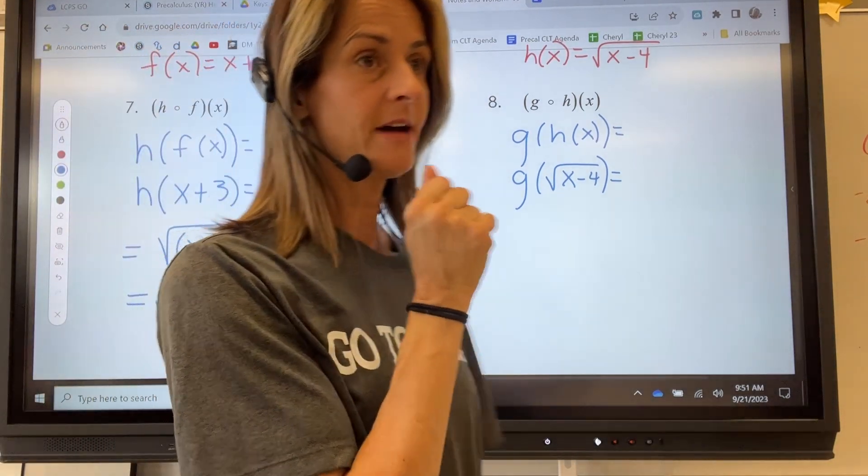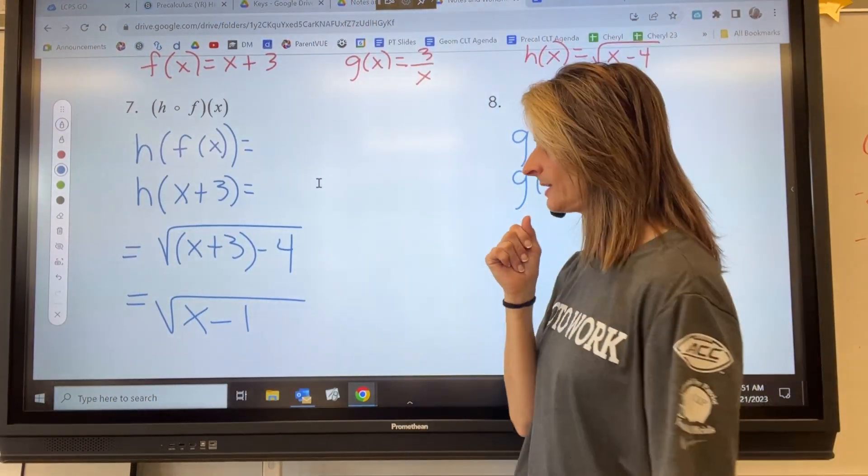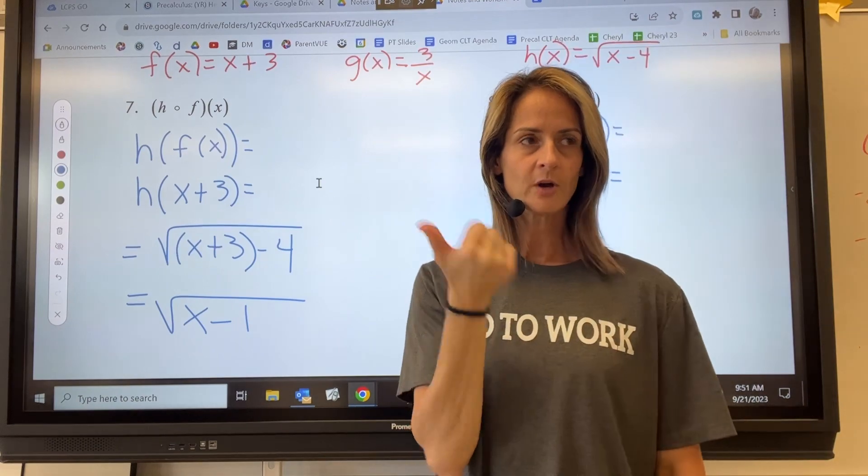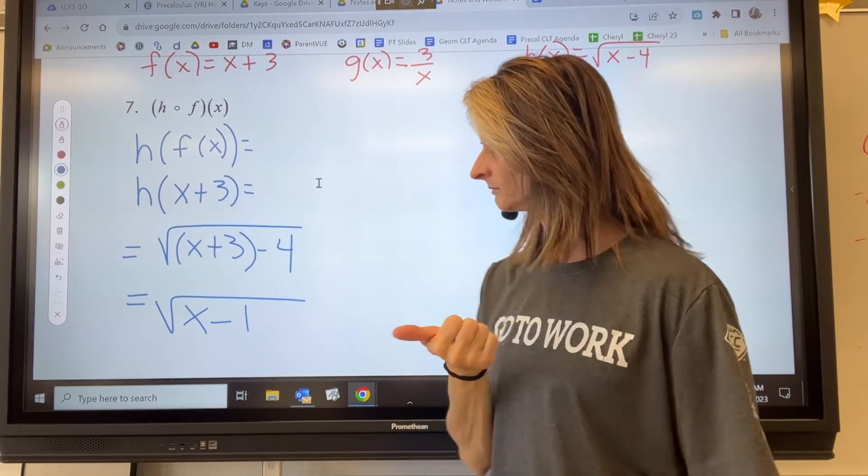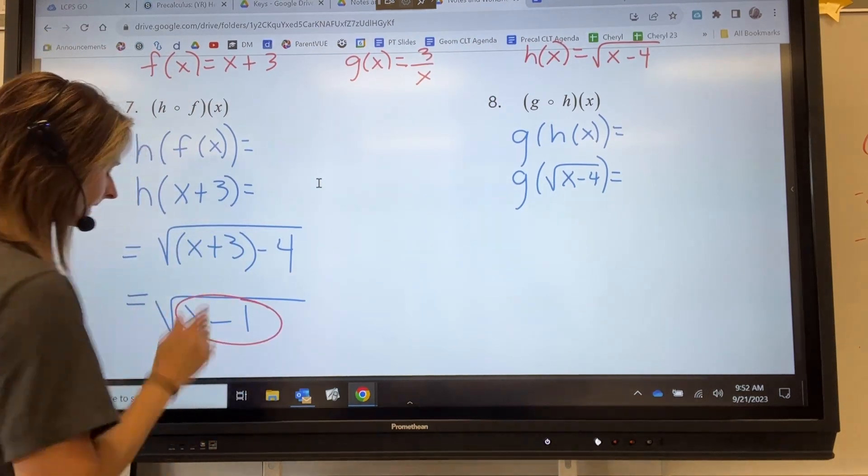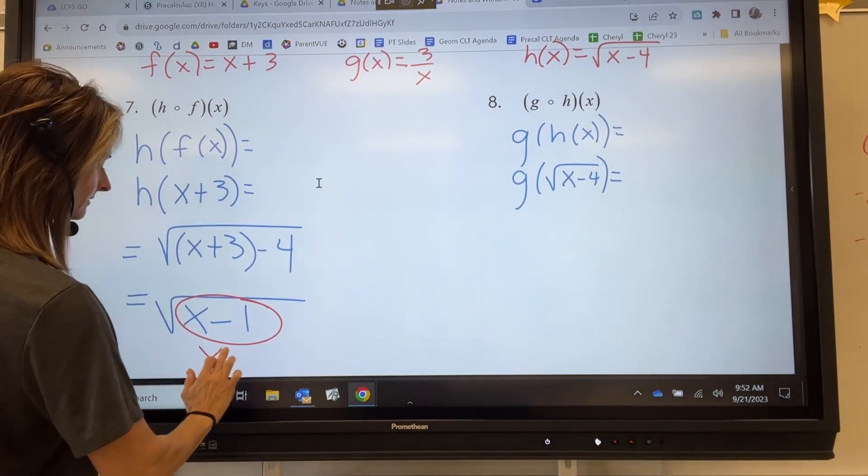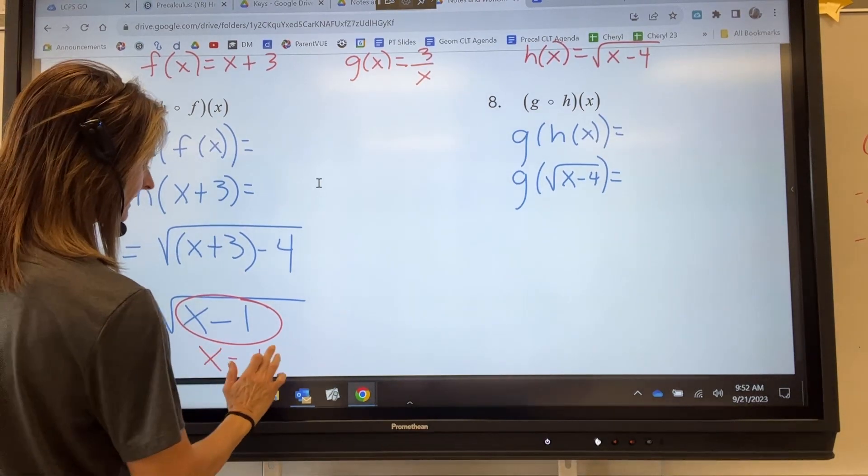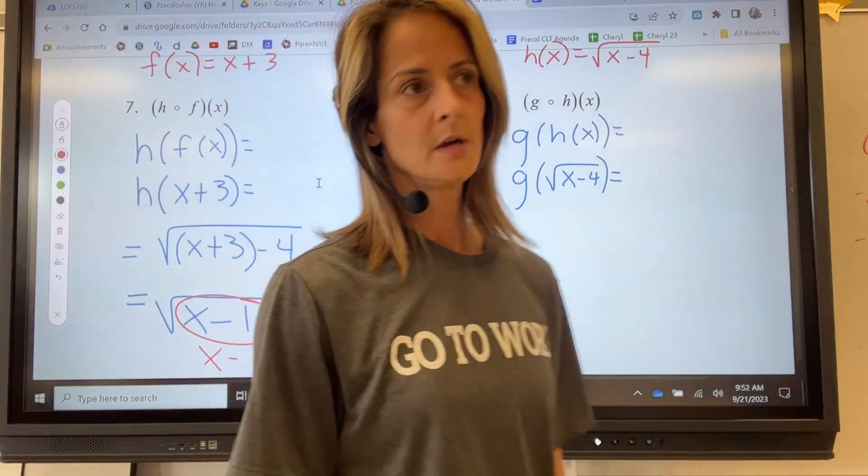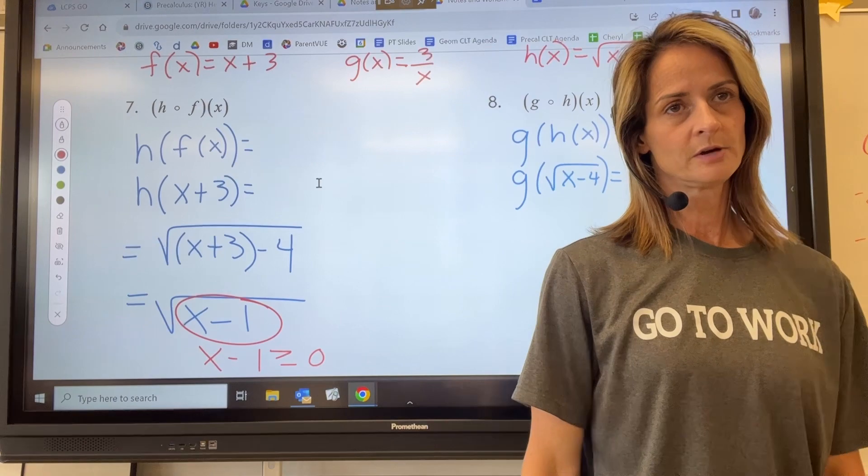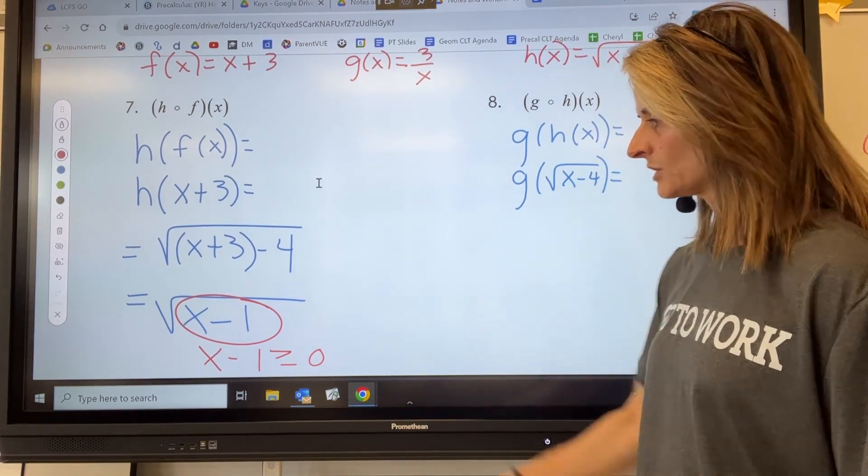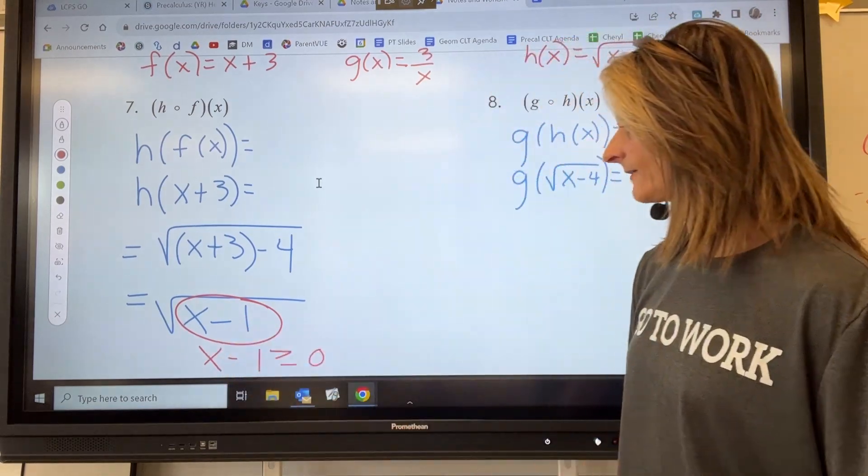Now, do we have any domain restrictions? We've got a radical. We have to take what's under the radical and make sure that x minus 1 has to be greater than or equal to 0. It's okay if it's equal to 0, because we can plot the point 0, 0.